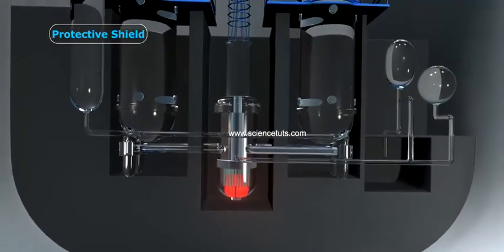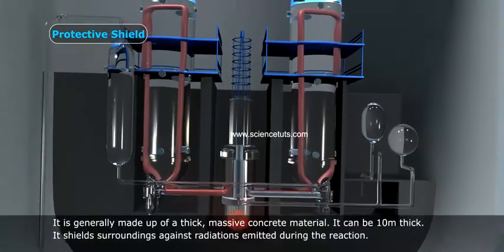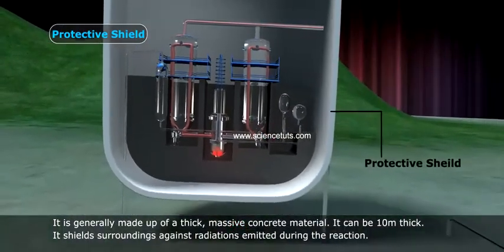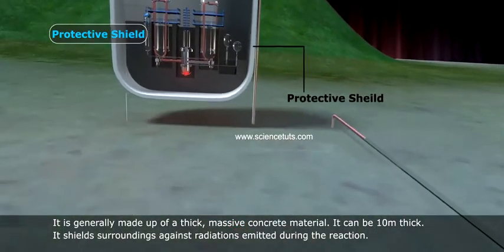Six, protective shield: It is generally made up of a thick massive concrete material. It can be 10 meter thick. It shields surroundings against radiations emitted during the reaction.